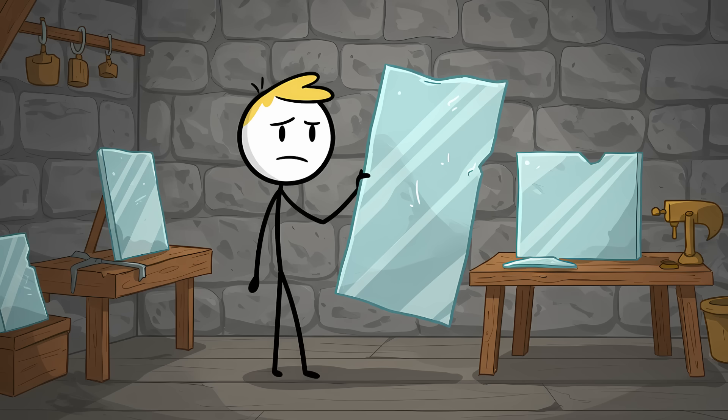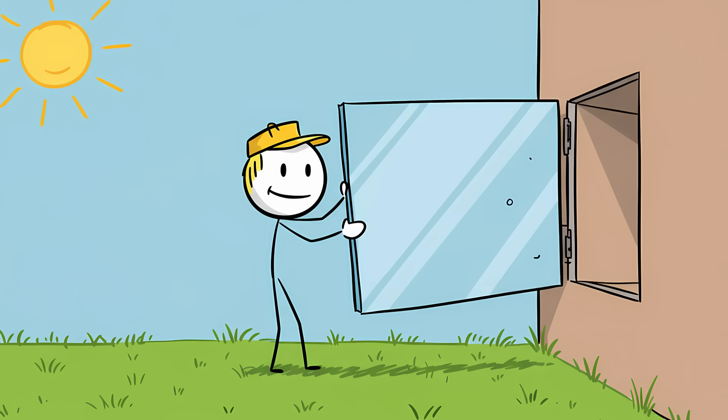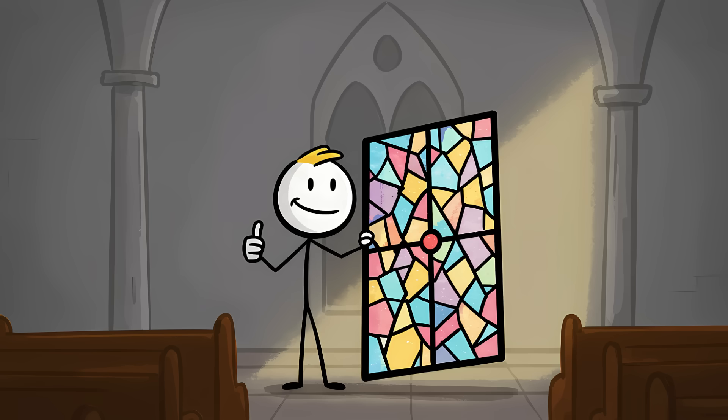So why are those old cathedral windows thicker at the bottom? The answer is much more mundane. Medieval glassmaking technology was just not very good. When they created panes of glass, the process resulted in sheets that were uneven and imperfect, thicker in some spots, thinner in others. When it came time to install the windows, the sensible glaziers of the day simply put the thickest, heaviest part at the bottom for stability. That's it. It's not a testament to the strange physics of supercooled liquids. It's a testament to the practicality of medieval craftsmen.